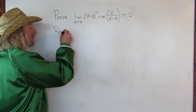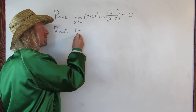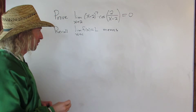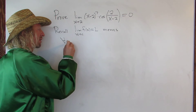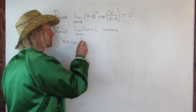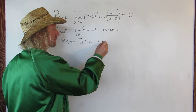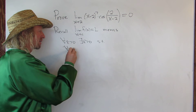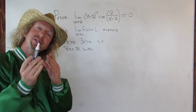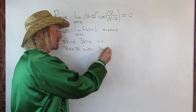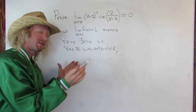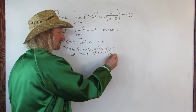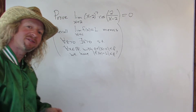Recall first what it means — what a limit is. So if you take the limit as x approaches c of f of x and you get L, this means, using the formal notation, that for every epsilon greater than 0, there exists a delta greater than 0 such that for every real number x where the distance between x and c — absolute value of x minus c — is less than delta, then the distance between f of x and L is also small. That's the formal, precise definition of a limit.